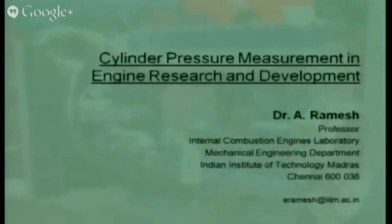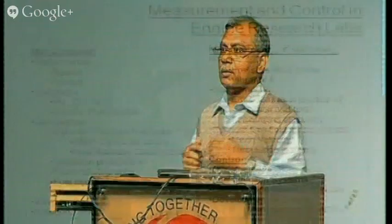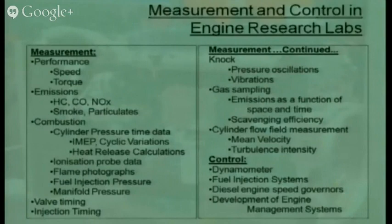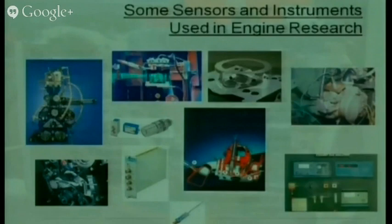There are different levels of measurements. We also do measurements aimed at control — for example, controlling a dynamometer, a fuel injection system, diesel engine speed, spark timing, fuel injection quantity, fuel injection timing, and turbocharger parameters. In all these cases, we end up doing lots of measurements with different levels of accuracy and different kinds of sensors. But today we are going to focus more on cylinder pressure.